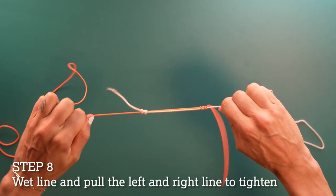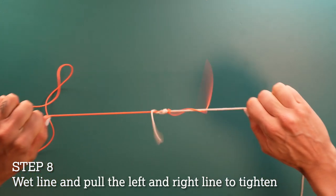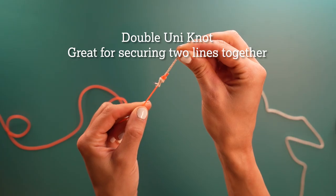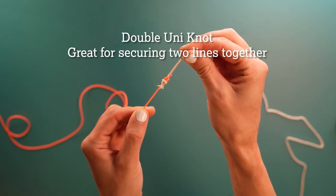Wet both lines with saliva or water and pull evenly on the left and right line to cinch down all of the way. Don't forget to trim your tag ends and you have successfully tied the double uni knot.